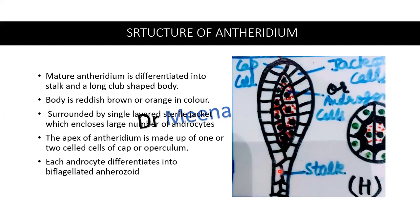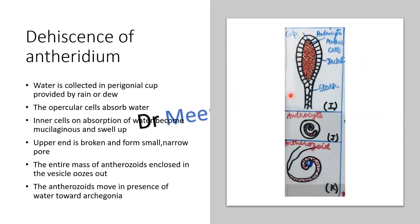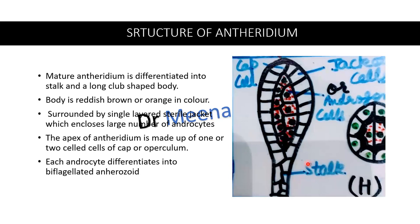This is the body of the antheridium. This is the multicellular stalk, bounded by a single-layered jacket. The color of the body can be reddish brown or orange. Inside are present a large number of androcyte mother cells. This part at the tip is called as the cap cell. These androcyte mother cells will differentiate later on into antherozoids. Each androcyte mother cell will develop into an androcyte or antherozoid, and this is biflagellated in nature. The two flagella are of smooth and whiplash type. This is the elongated nucleus, and this part shows the remains of cytoplasm.